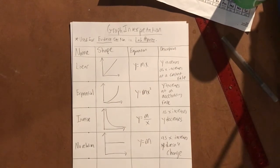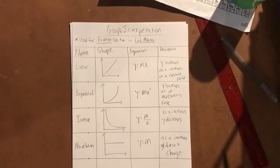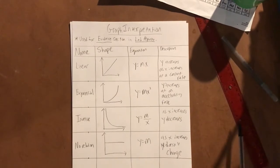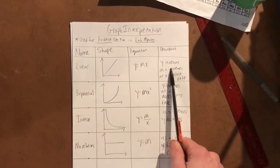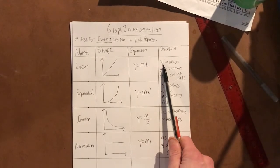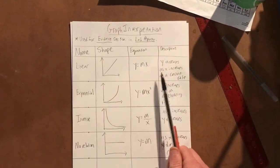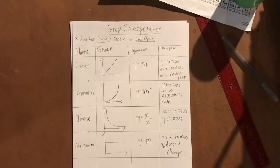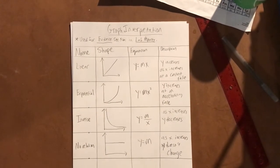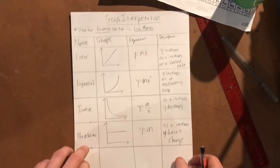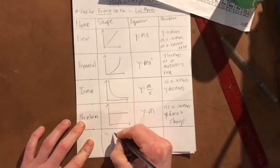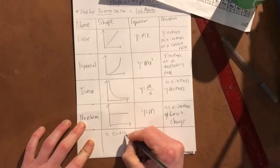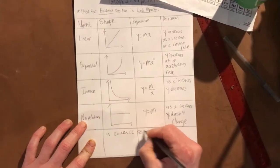Whenever we create a graph in our evidence section, we're gonna say, 'well that was linear, so as y increases, x increases at a constant rate.' Now when you do a lab, you're not going to be using the words x and y.